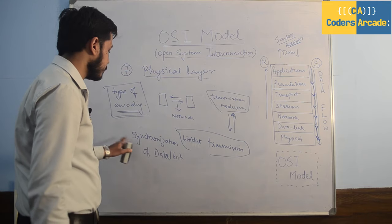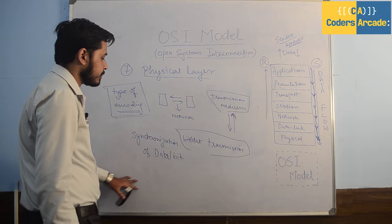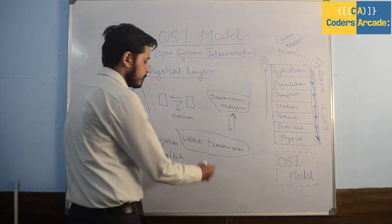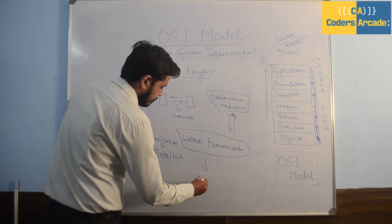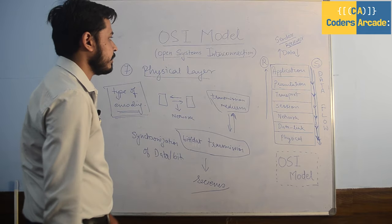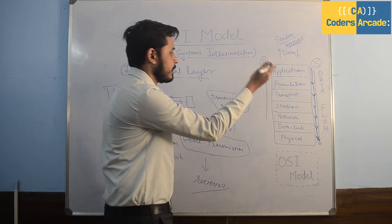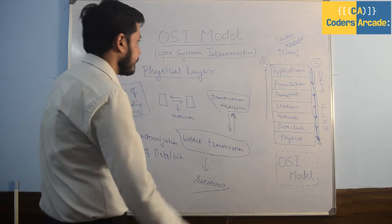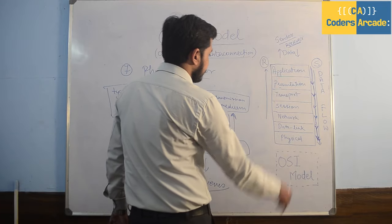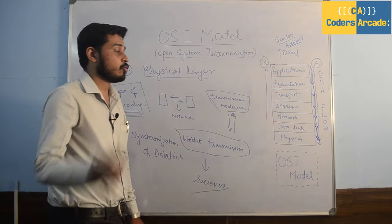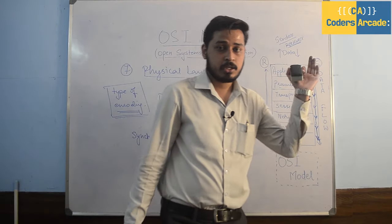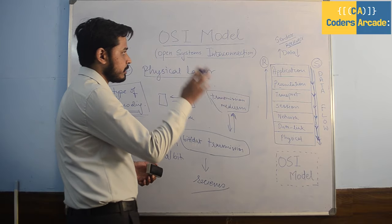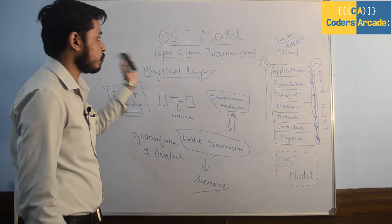After all this, data is transferred to the receiver from the physical layer. This is how your data travels from application layer to presentation layer, then transport layer, session layer, network layer, data link layer, and finally physical layer. Then it goes back through all those steps and is received by the receiver, who is sitting on the application layer.